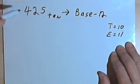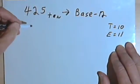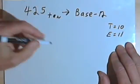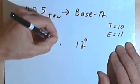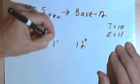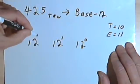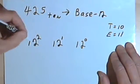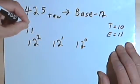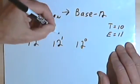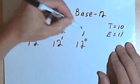I'll do this two ways. The first way is I'm going to write my powers of 12 — powers of the base. So the base was 12, so I'll have 12 to the 0, 12 to the 1st, and 12 squared. 12 squared is 144, 12 to the 1st is 12, and 12 to the 0 is 1.